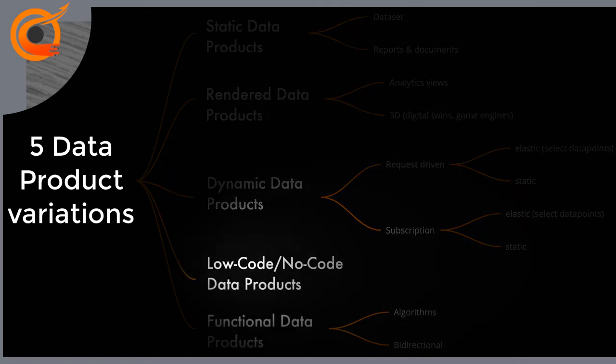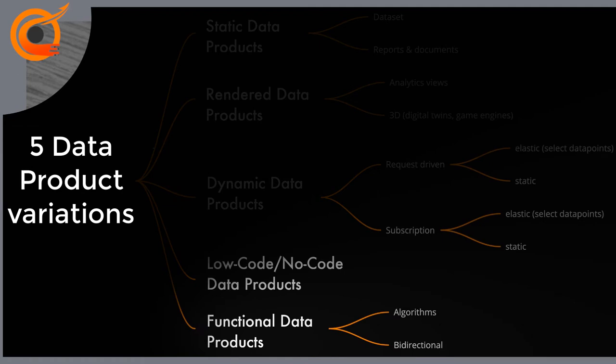Low-code/no-code platform data products are out-of-the-box compatible with services like Zapier, If This Then That, and Microsoft Power Apps, to mention a few. Functional data products are APIs and algorithms. Examples are algorithms for data mining, matching, cleansing, relevance computation, and lineage tracing. Developers may upload these algorithms to a data marketplace as a black-box user-defined function, so other participants may buy and try out these algorithms. Another subcategory is bidirectional data products, which are intended to give control commands to data source systems instead of just getting information for an application.